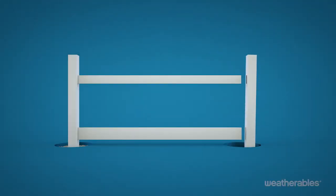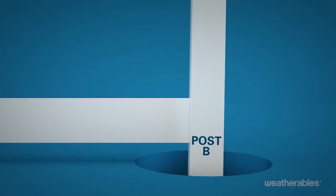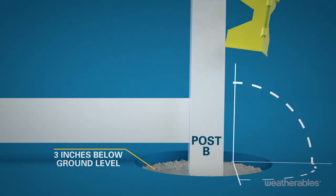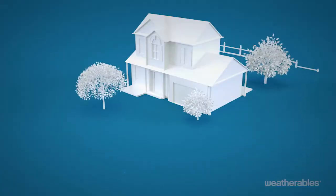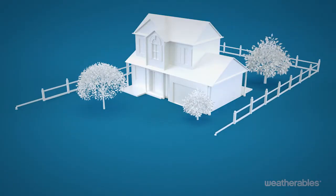Next, slide the bottom rail and then the top rail into post B. Pour concrete around post B to about three inches below ground level. Level and plumb. Repeat down the fence line to install the remaining posts and rails.